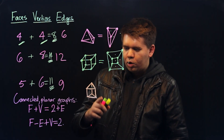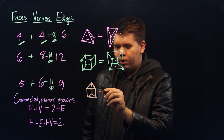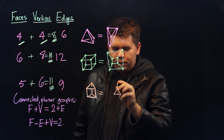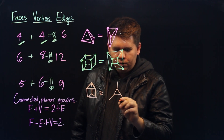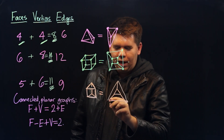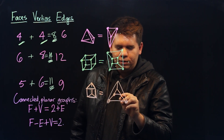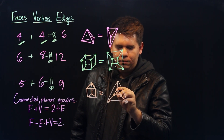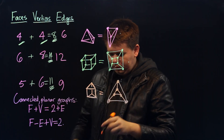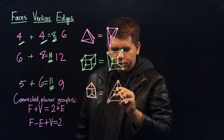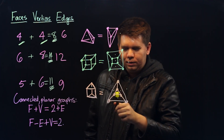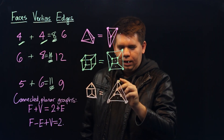Similarly, with our prism, we can do a similar smashing down move. We can redraw it to look like this as a planar graph, where none of the edges are crossing. And we can see it still has five faces, six vertices, and nine edges.